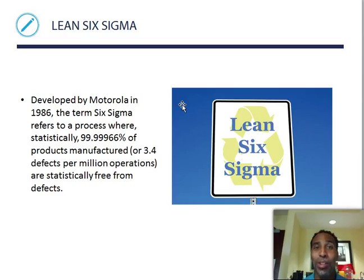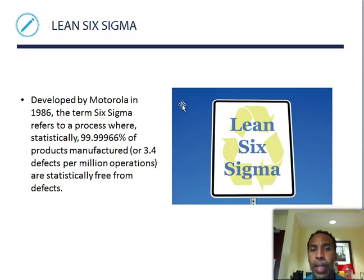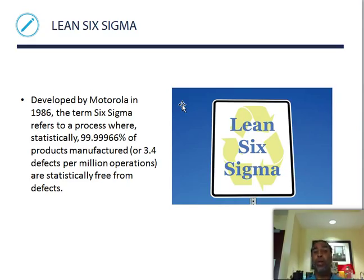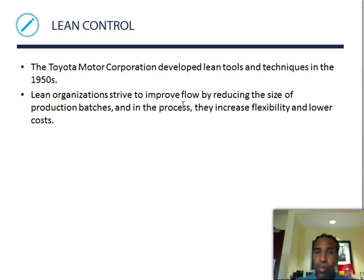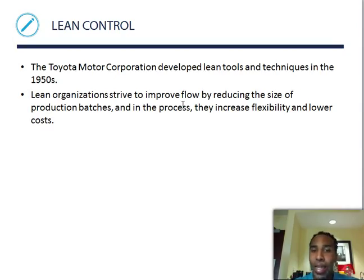Lean Six Sigma was developed by Motorola in 1986. The term six sigma refers to a process where statistically 99.99966% of products manufactured — or 3.4 defects per million operations — are free from defects. The Toyota Motor Corporation developed lean tools and techniques in the 1950s. Lean organizations strive to improve flow by reducing the size of production batches, thereby increasing flexibility and lowering costs.